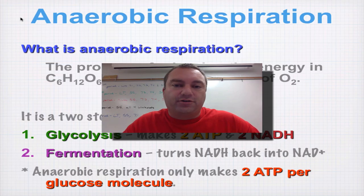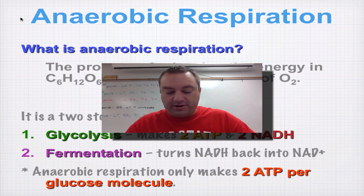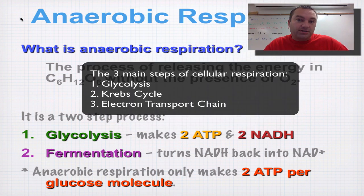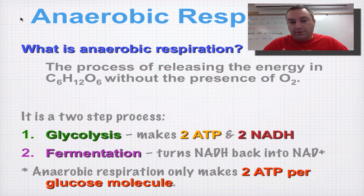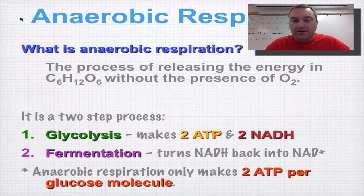Welcome to our final episode from chapter nine. In this episode we're going to cover anaerobic respiration. This anaerobic pathway is not as efficient as the aerobic pathway. The aerobic pathway has three steps: glycolysis, the Krebs cycle, and the electron transport chain, and it's in the electron transport chain where you're going to produce the most ATP. The Krebs cycle and the electron transport chain use oxygen, and you're going to get more bang for your buck.